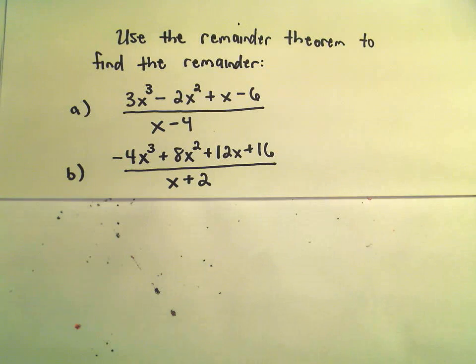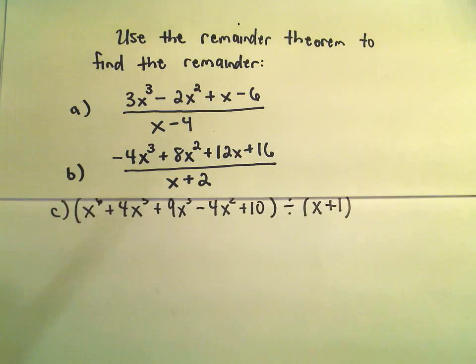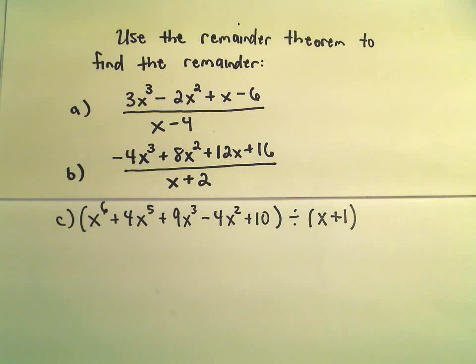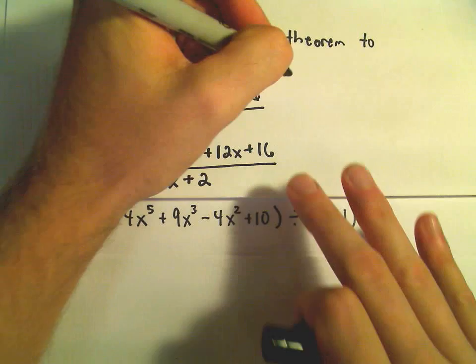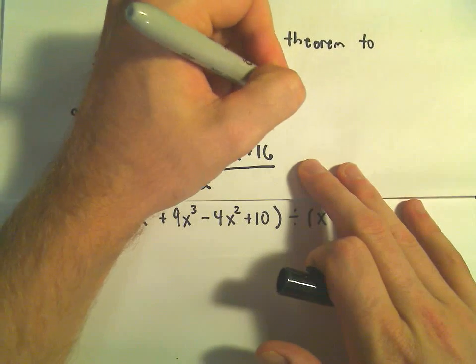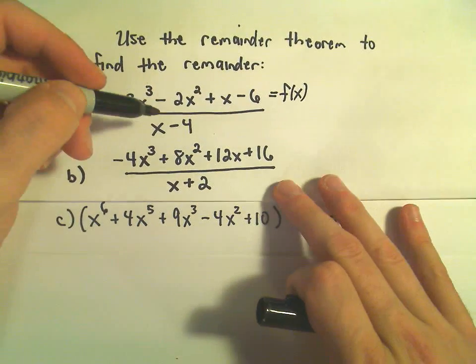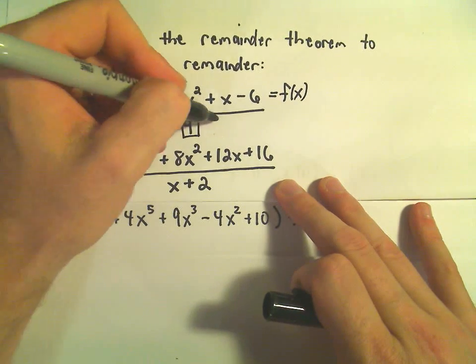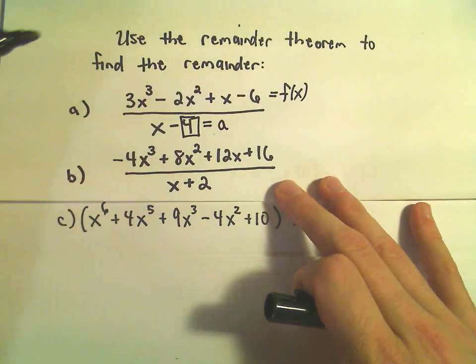So a few examples here. I'm going to see if I can squeeze three of them in. In the first one, notice we've got 3x³-2x²+x-6. That's our f(x) that's being divided. In this case we're dividing by x-4. So this number, that's going to be our a value,